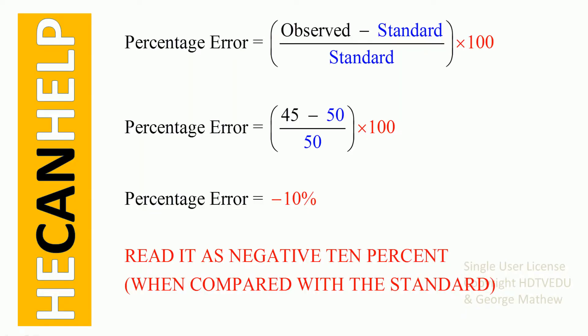The percentage error is given by: observed minus standard, divided by standard, times 100. This result is very useful to all of us.